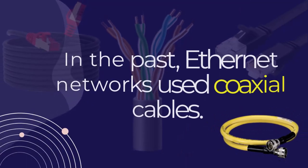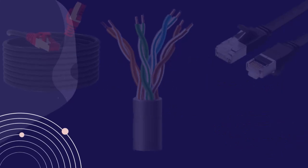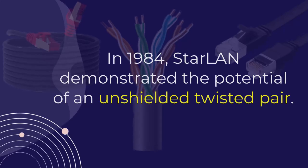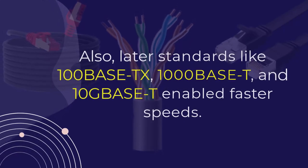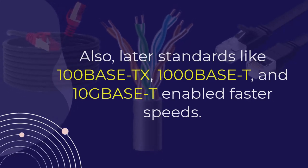In the past, Ethernet networks used coaxial cables. In 1984, Starlan demonstrated the potential of unshielded twisted pair, which paved the way for 10BASE-T. Later standards like 100BASE-TX, 1000BASE-T, and 10GBASE-T enabled even faster speeds.